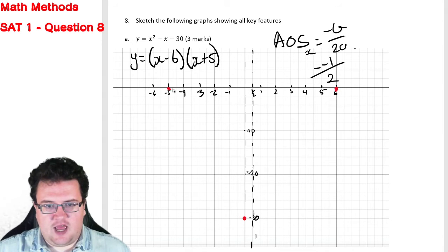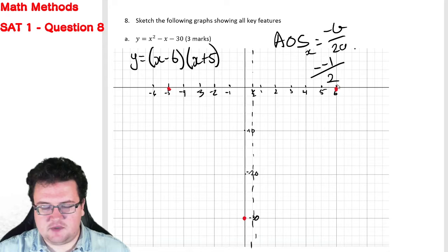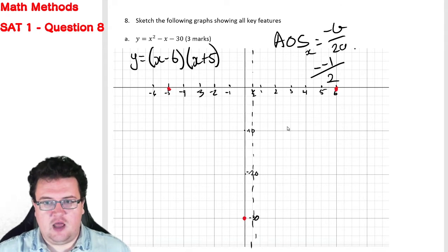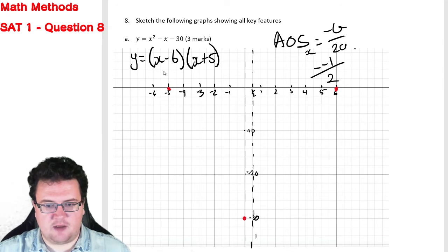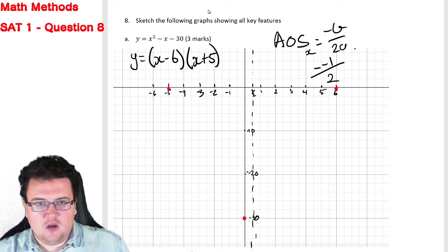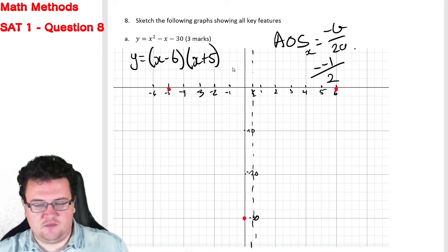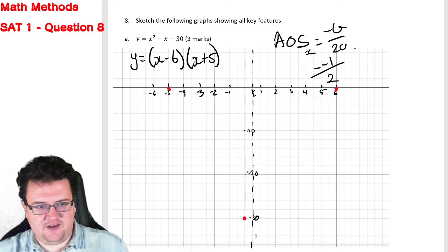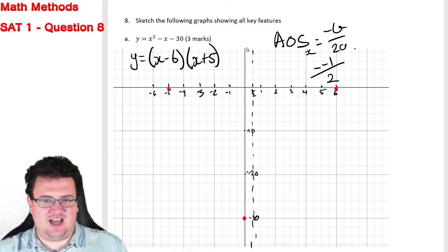So now we have two intercepts. We have the y-intercept, we have an axis of symmetry, and from there we should be able to draw something of a reasonable graph. But for the sake of completion, we need to show all key features, which means that since we've worked out the axis of symmetry, we should probably find out where the turning point is.